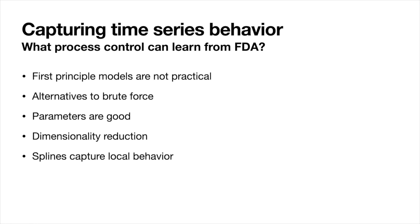What process control can learn from functional data analysis is that time series models have many difficulties. In case of process variables, first principle models are theoretically possible, because we have support of physics and mathematics, that we can create a model that we, at least theoretically, know how everything interacts with each other. But identification of parameters of that model and getting complete measurements for that model is not plausible.